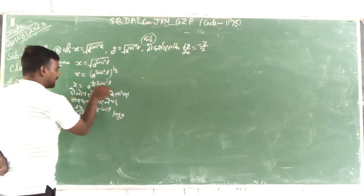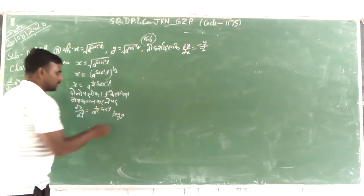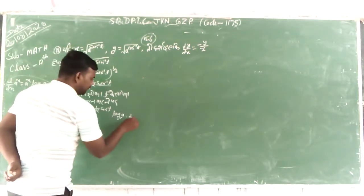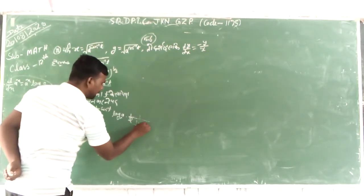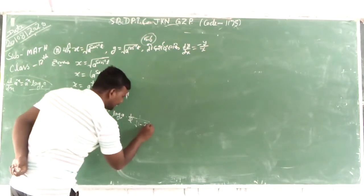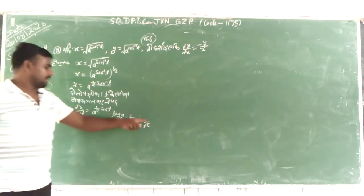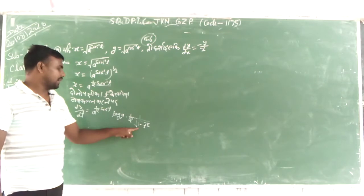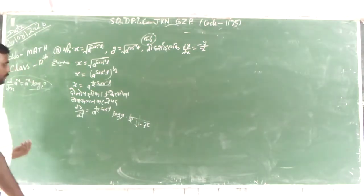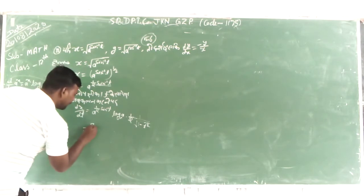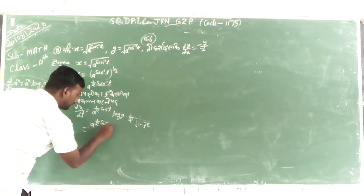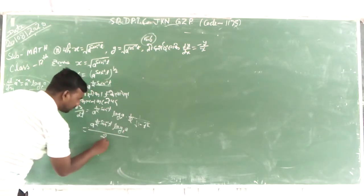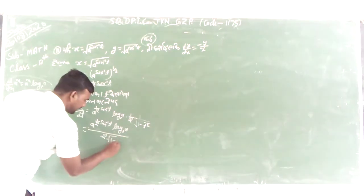Now, we have log A — 1 by 2 sin inverse t. This will open up. We can see log A times 1 by 2 sin inverse t. Now, differentiating sin inverse t gives 1 upon root 1 minus t square. What is t square? 1 upon root 1 minus t square.